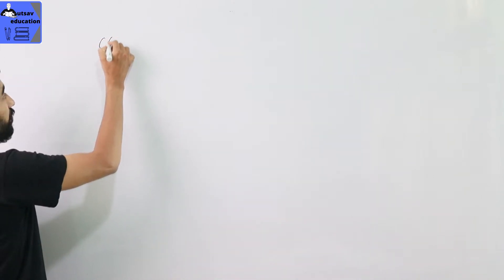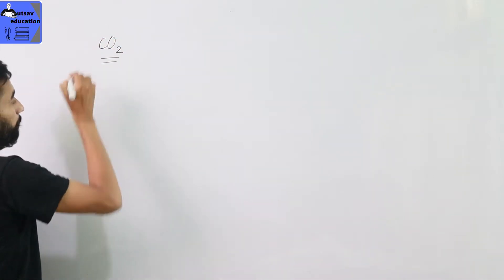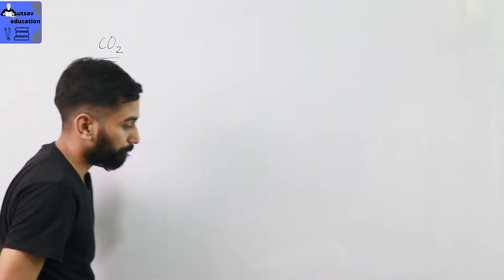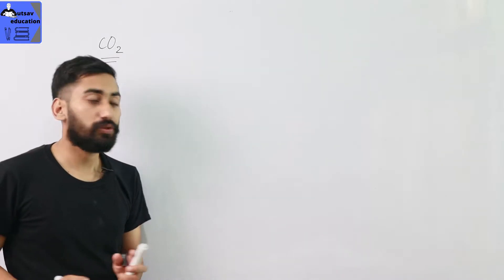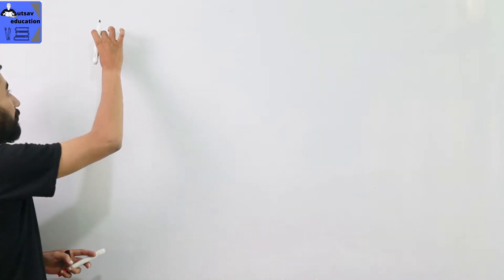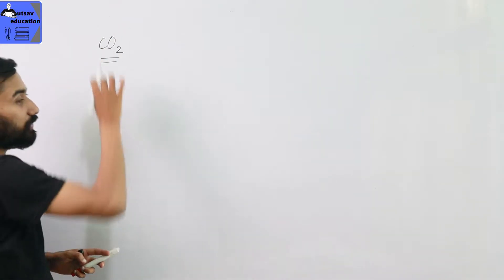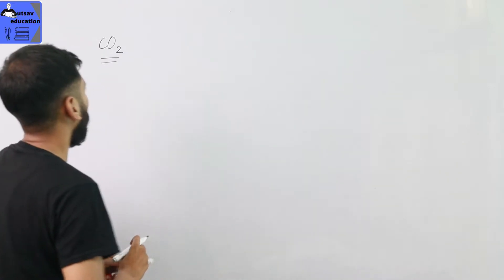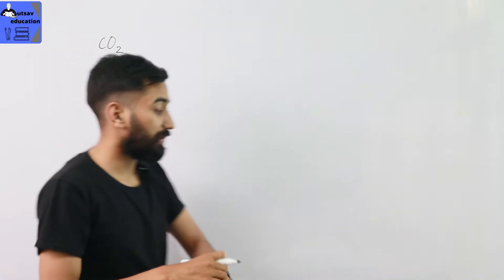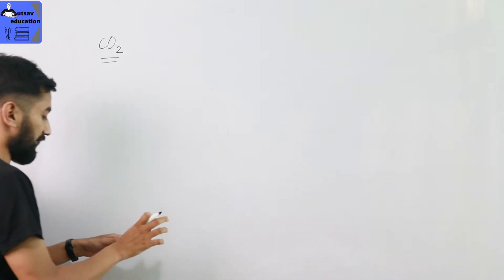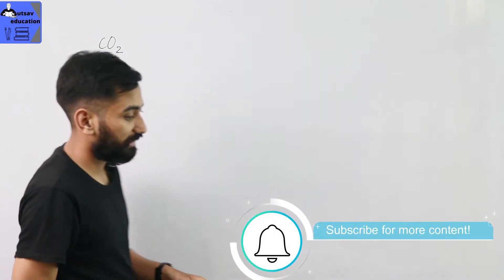First we are going to start the lesson of carbon dioxide. CO2 consists of one molecule of carbon and two molecules of oxygen. This gives us the molecular mass of carbon dioxide.